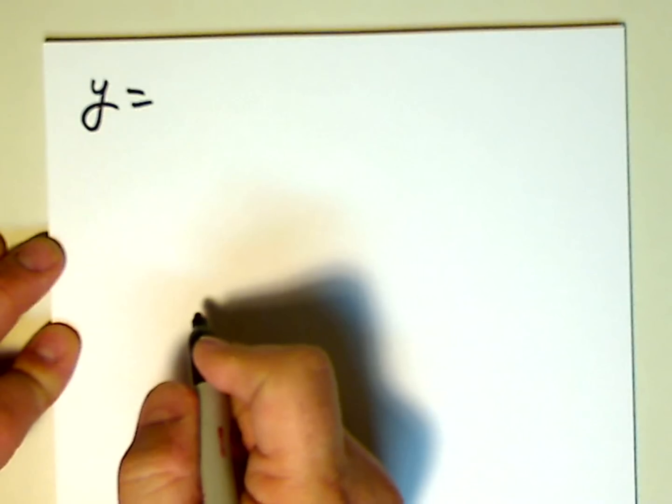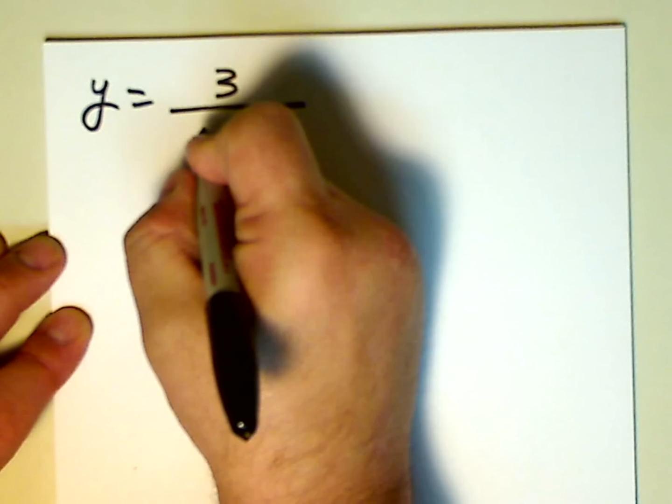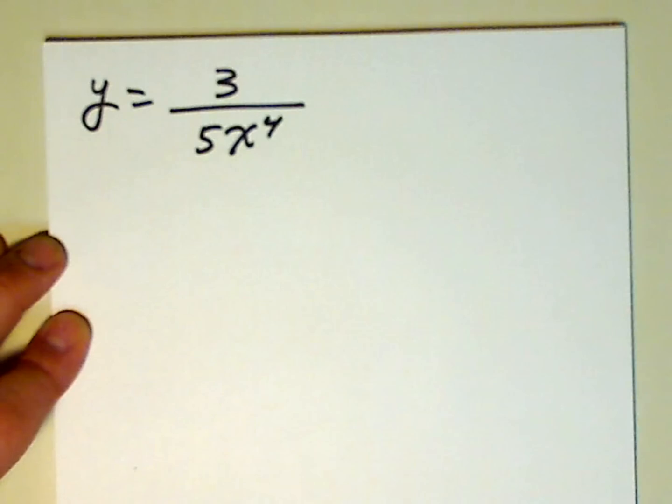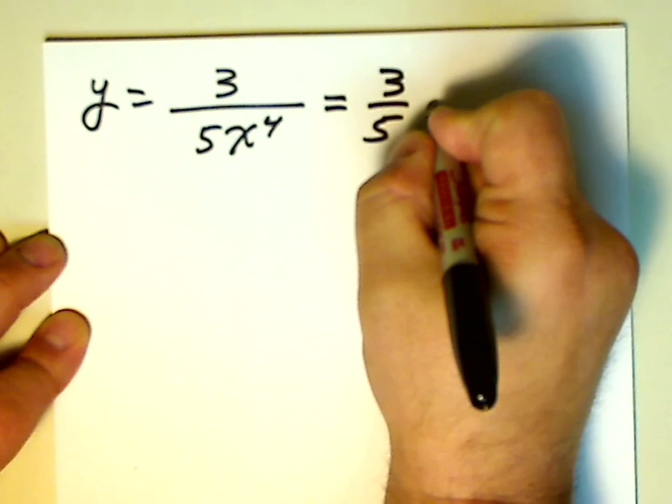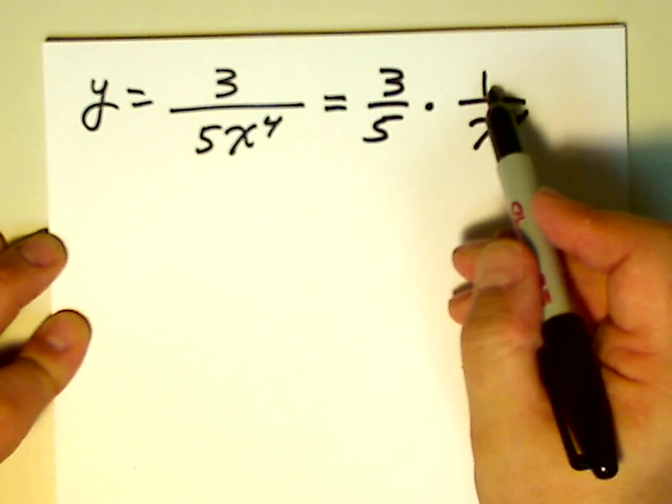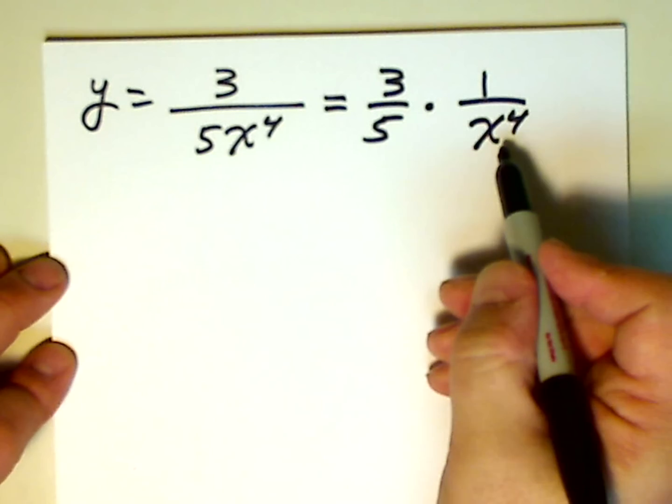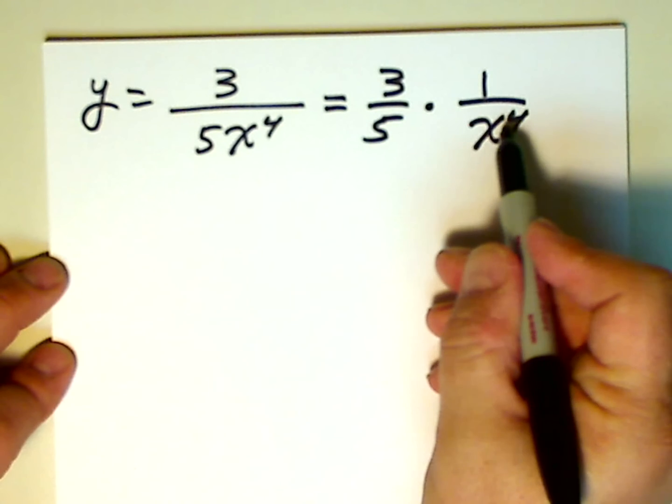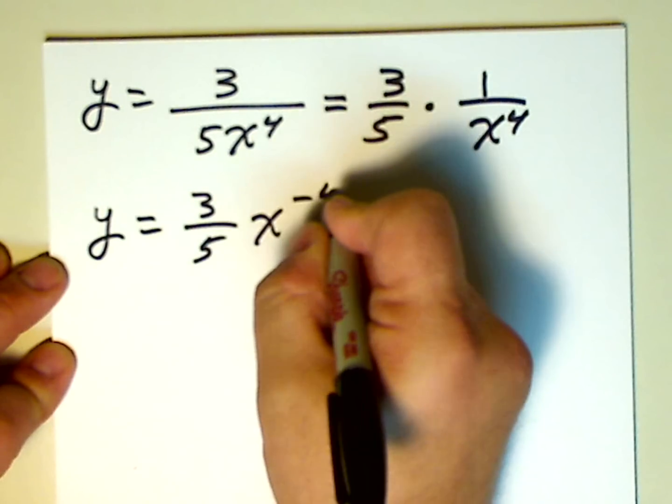How about y equals 3 over 5x to the 4th? Well, we're going to do the same thing. We're going to break out the 3 fifths. 3 over 5 times 1 over x to the 4th. So again, if we multiplied 3 fifths by 1 over x to the 4th, it would multiply out as 3 over 5x to the 4th. And now we can get rid of the denominator here by using a negative exponent. So y is equal to 3 fifths x to the negative 4.